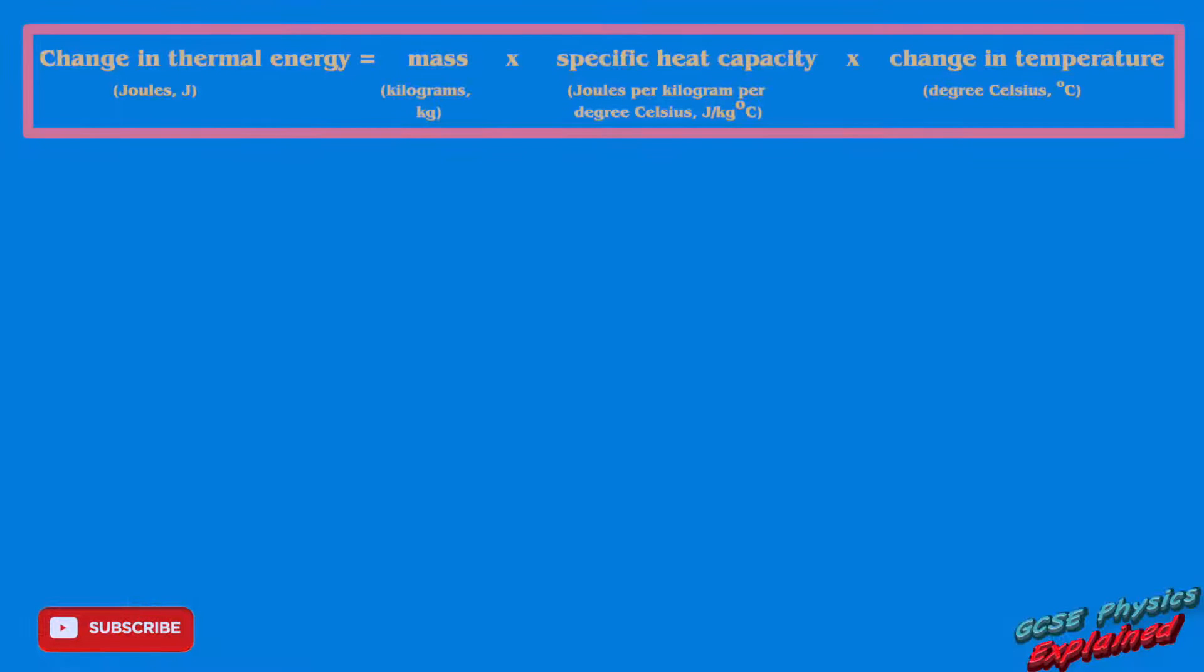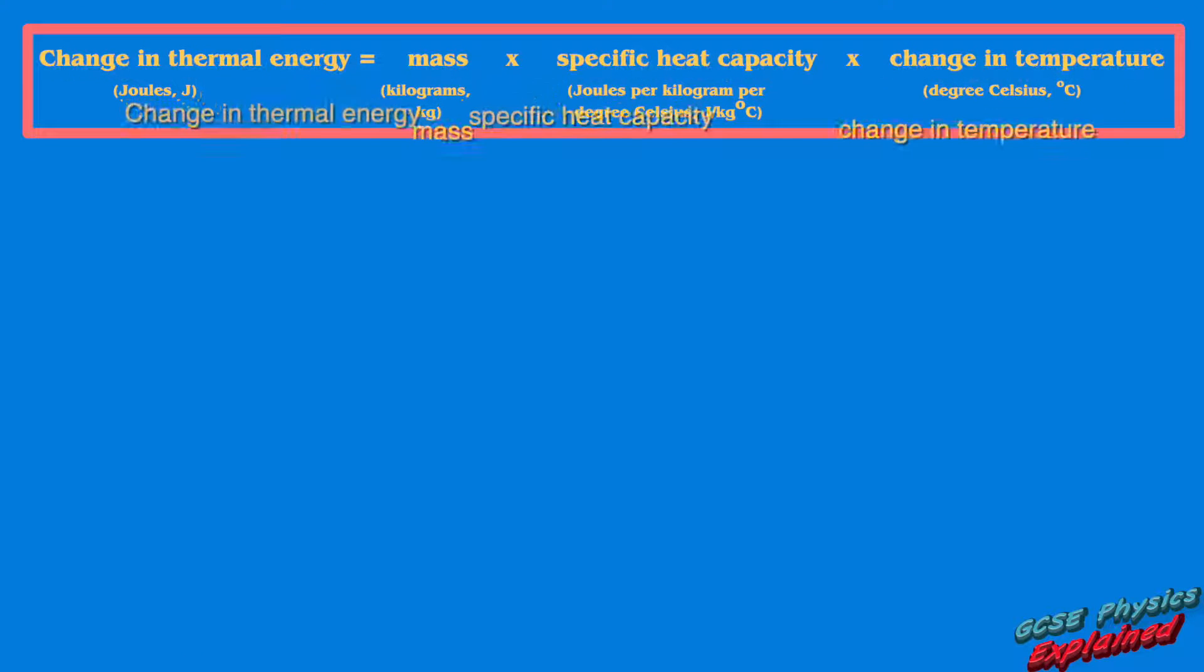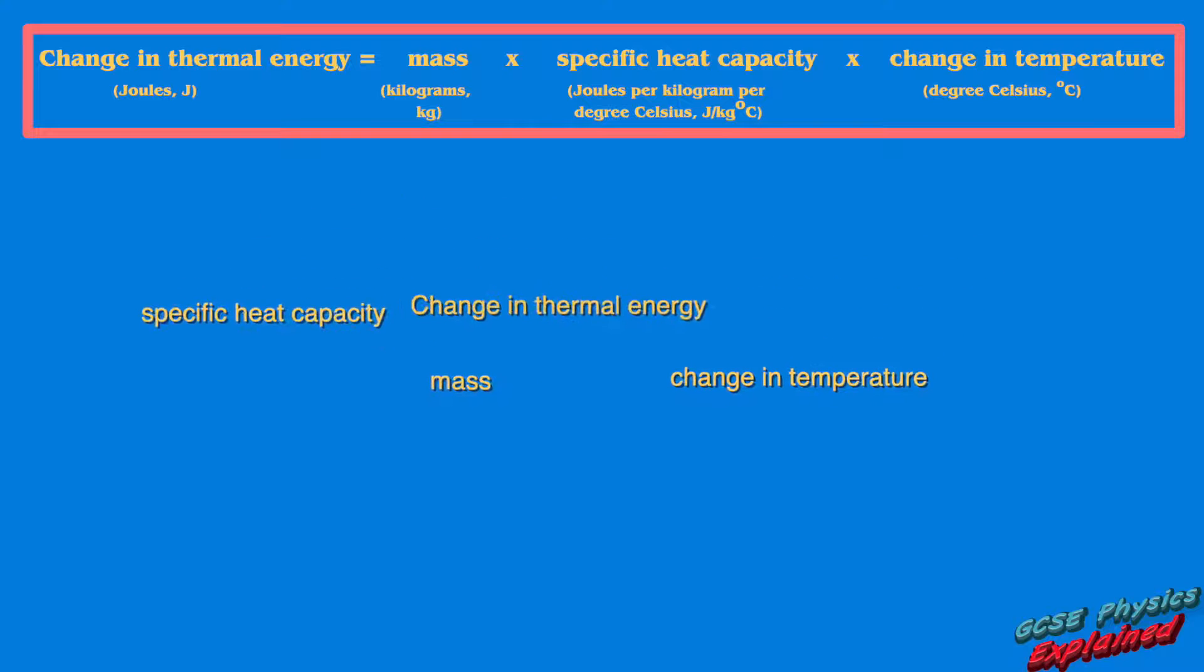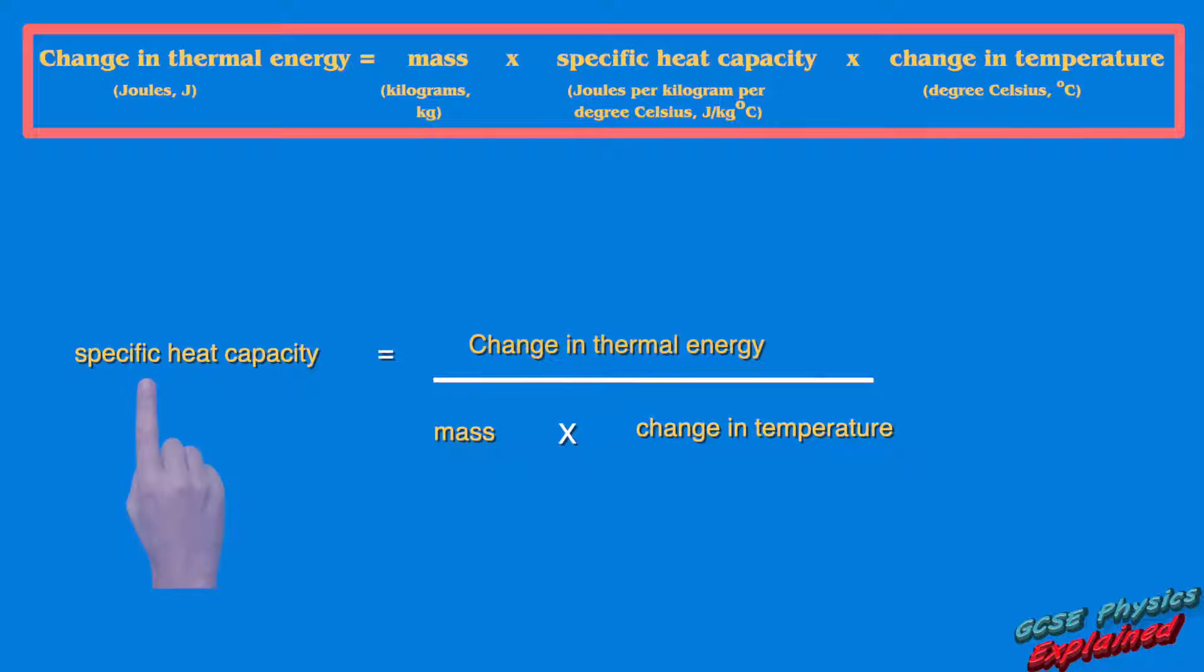So here's the calculation involving specific heat capacity. Let's rearrange it to make specific heat capacity the subject. So to calculate the specific heat capacity of something we need to know the change in energy, the mass and the change in temperature.